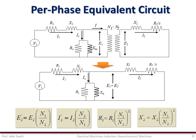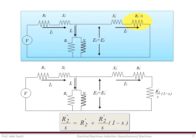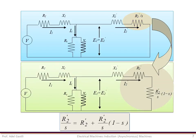Notice that this equivalent circuit is very similar to the one we have seen for the transformer circuit. As we have seen earlier, the rotor equivalent resistance R'2/S can be split into two resistances — one constant and one function of the slip — so the equivalent circuit can be represented accordingly.